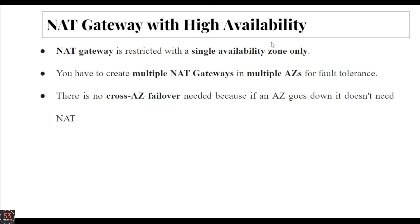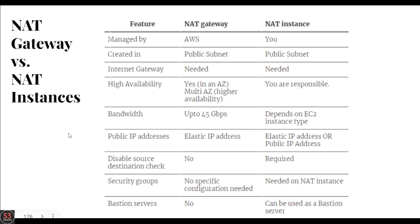Now let's talk about NAT gateway with high availability. NAT gateway is restricted within a single availability zone only. If you want high availability for fault tolerance, you can create multiple NAT gateways in multiple availability zones. There is no cross-availability-zone failover needed, because if an availability zone goes down, it doesn't need a NAT gateway.